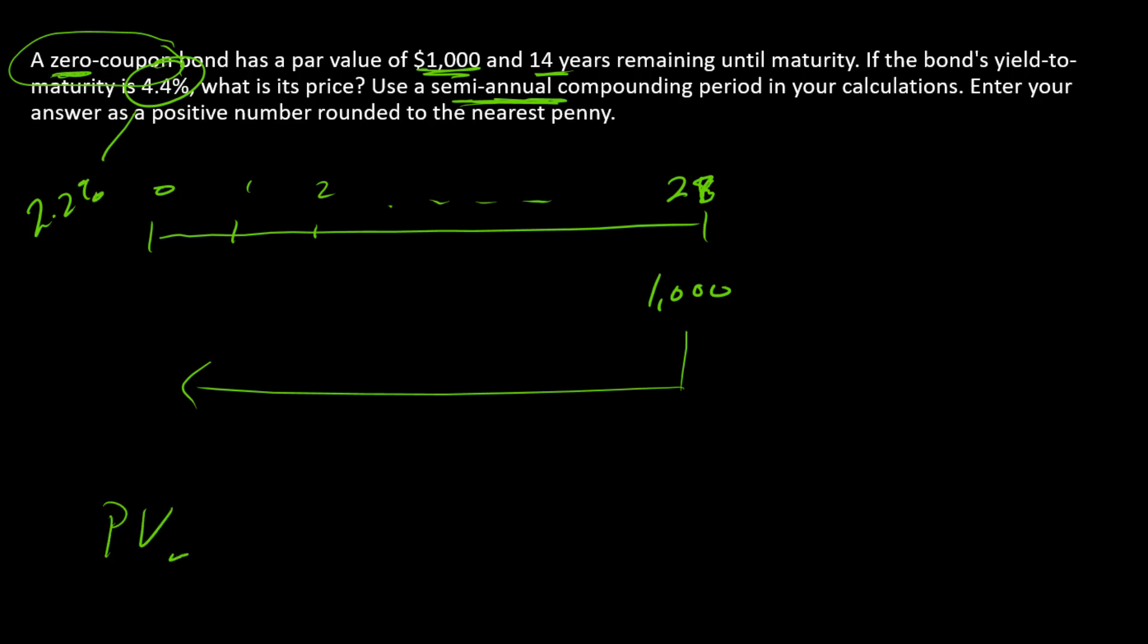So the PV is $1,000 divided by 1.022 raised to the what power? The 28th power. So you can enter that directly into your calculator and compute it.